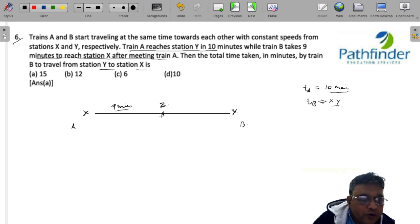You know that the time taken by B over ZX is 9 minutes. And you know that the time taken by A over XY is 10 minutes. Obviously, both the trains started at the same time from X and Y respectively. Let us say the time taken by both to the meeting point is T.